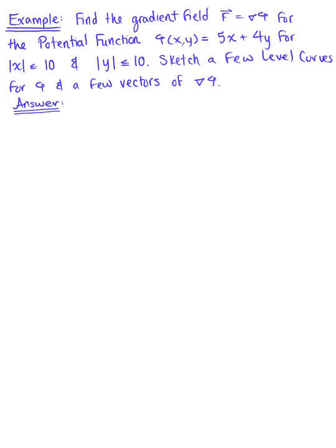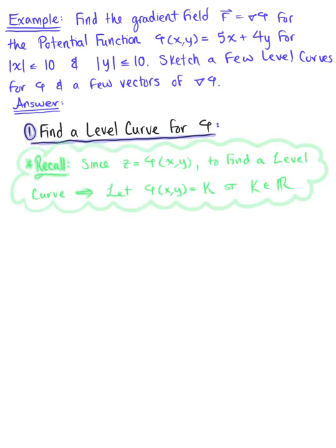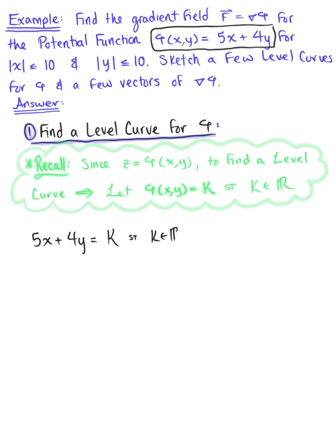To begin, the first thing we want to do is find a level curve for phi. Phi of xy is a function, so we can set it equal to z. To find the level curve, we simply let phi of xy equal some real number, some scalar value k. Our function phi of xy is defined as 5x plus 4y, so we have 5x plus 4y equals k. Keep in mind that this is restricted such that the absolute value of x is less than or equal to 10.